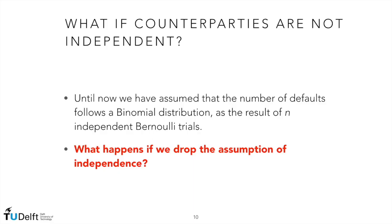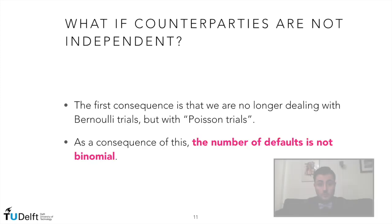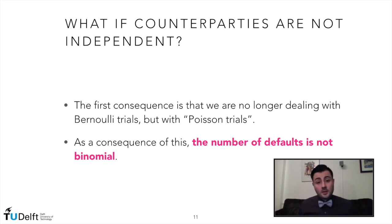Until now, we have assumed defaults to be independent, so that their number can be seen as a binomial random variable generated by independent Bernoulli trials. Now, what happens if we drop the assumption of independence? The first consequence is that we are no longer dealing with Bernoulli trials, because we don't have the same probability for all counterparties. We enter the field of Poisson trials, meaning the number of defaults no longer follows a binomial distribution, but something else.